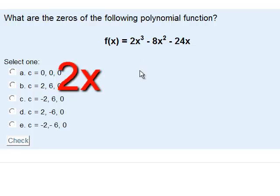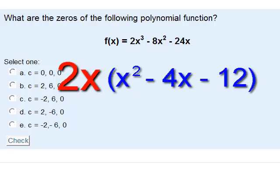So, let's rewrite this as 2x parentheses x squared minus 4x minus 12. If we multiply 2x times what was inside the parentheses, we would get the exact same function here.